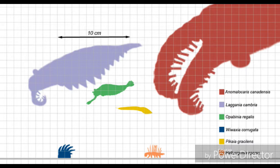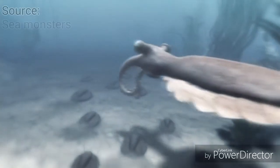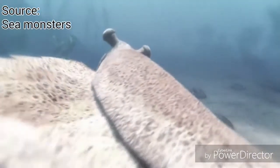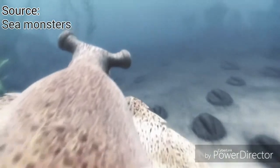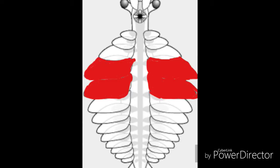Anomalocaris had on both sides of its body sets of flexible lobes which it used to propel itself underwater. The lobes weren't the same all throughout its body — the 4th and 5th were divided by far, and down the body the lobes got smaller and smaller. In total it had 11 lobes.